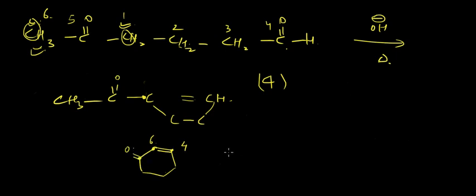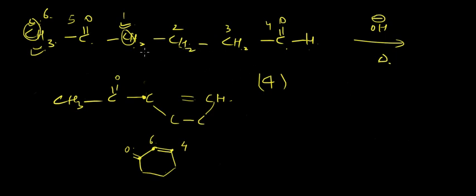We'll have a compound with a C=O attached. Counting the ring members: one, two, three, four, five, six — yes, six members only. So this was the major compound — the major product — in this intramolecular aldol condensation case forming a six-membered ring.